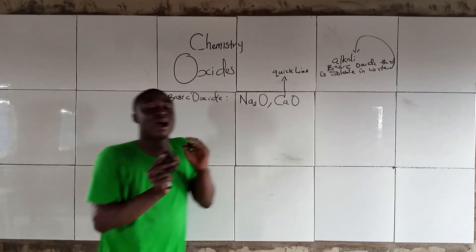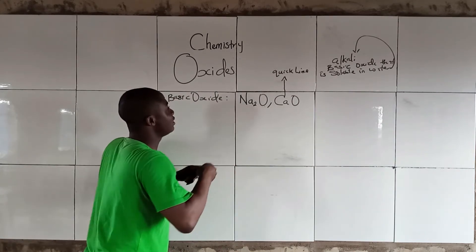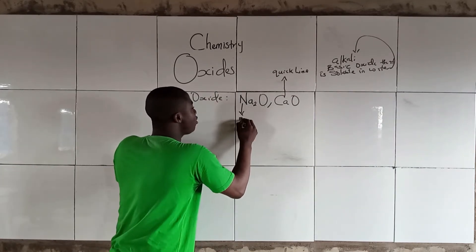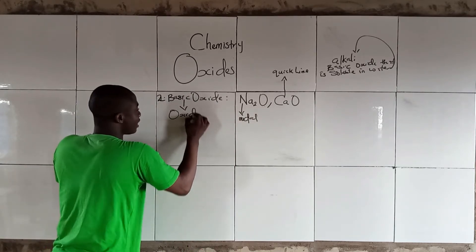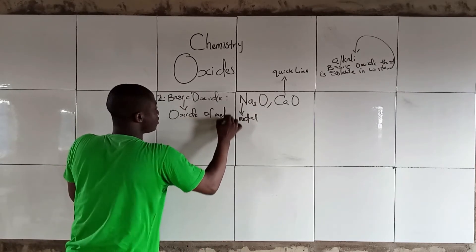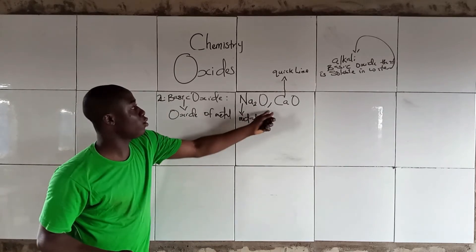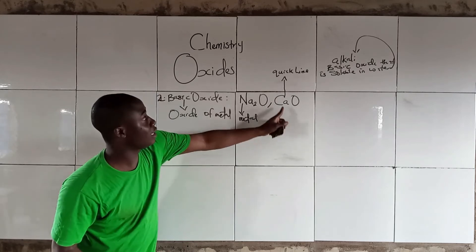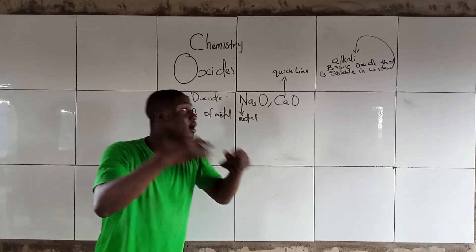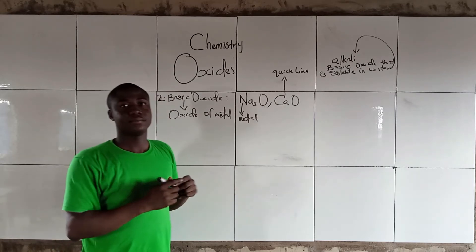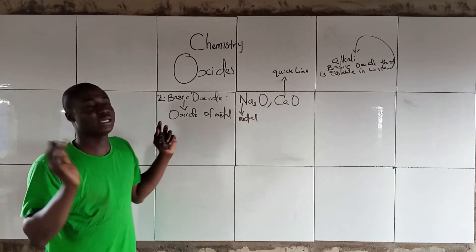Basic Oxides are oxides of metals. We have Sodium Oxide and Calcium Oxide, popularly called quicklime. When these basic oxides are soluble in water, we call them Alkali — a basic soluble hydroxide.